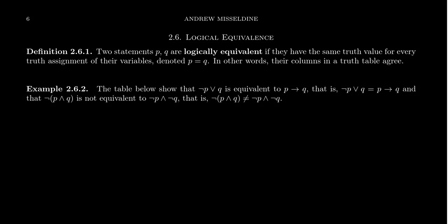In lecture eight, we introduced the notion of a truth table. And in lecture nine, we're going to use truth tables to help us determine when two logical statements are logically equivalent. What does it mean for two statements to be logically equivalent? We say that two statements P and Q are logically equivalent if they have the same truth value for every truth assignment of their variables.